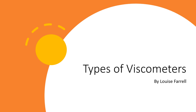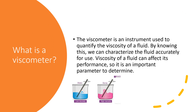In this video, we're going to look at some types of viscometers. A viscometer is an instrument used to quantify the viscosity of a fluid. By knowing this, we can characterize the fluid accurately for use. Viscosity of a fluid can affect its performance, so it's an important parameter to determine.